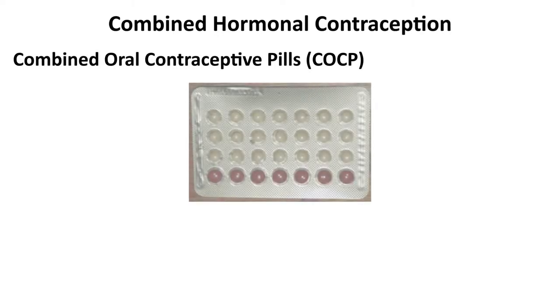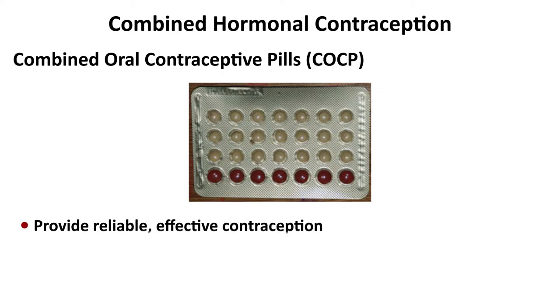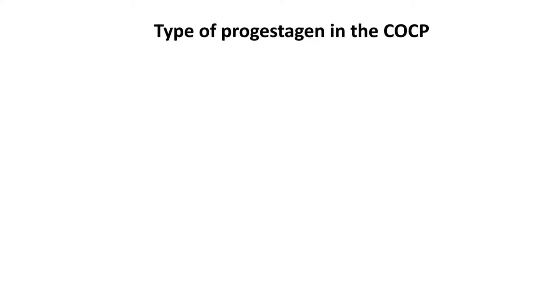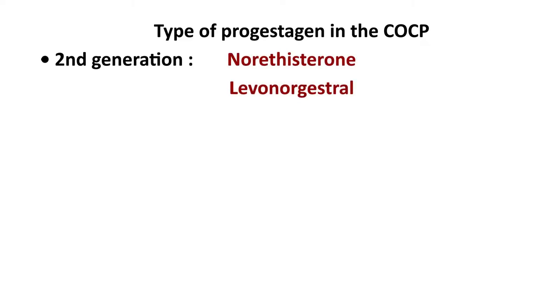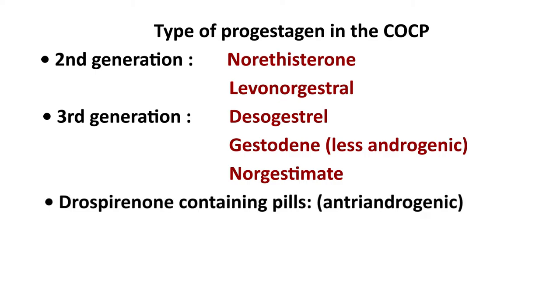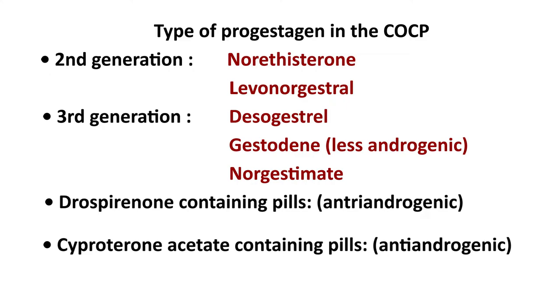Hormonal contraceptive methods. First, combined oral contraceptive pills or COCP provide reliable, effective contraception with a failure rate of 0.2 to 0.3%. They contain ethinyl estradiol 20 to 35 micrograms and are classified by the type of progestogen they contain. Second-generation COCPs contain norethisterone and levonorgestrel. Third-generation COCPs contain desogestrel, gestodene, and norgestimate. Some COCPs contain drospirenone and some contain cyproterone acetate, which are antiandrogenic.